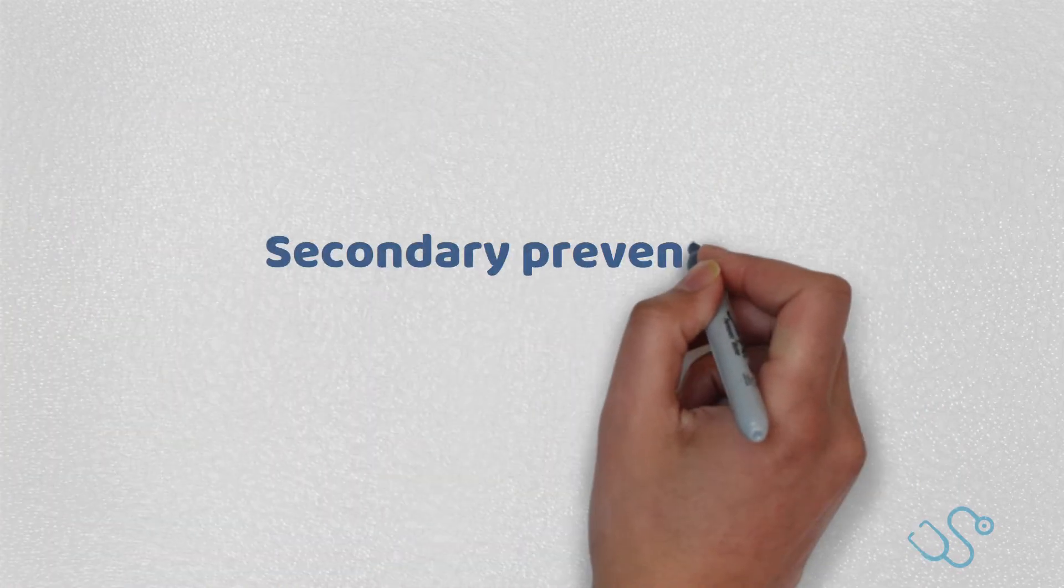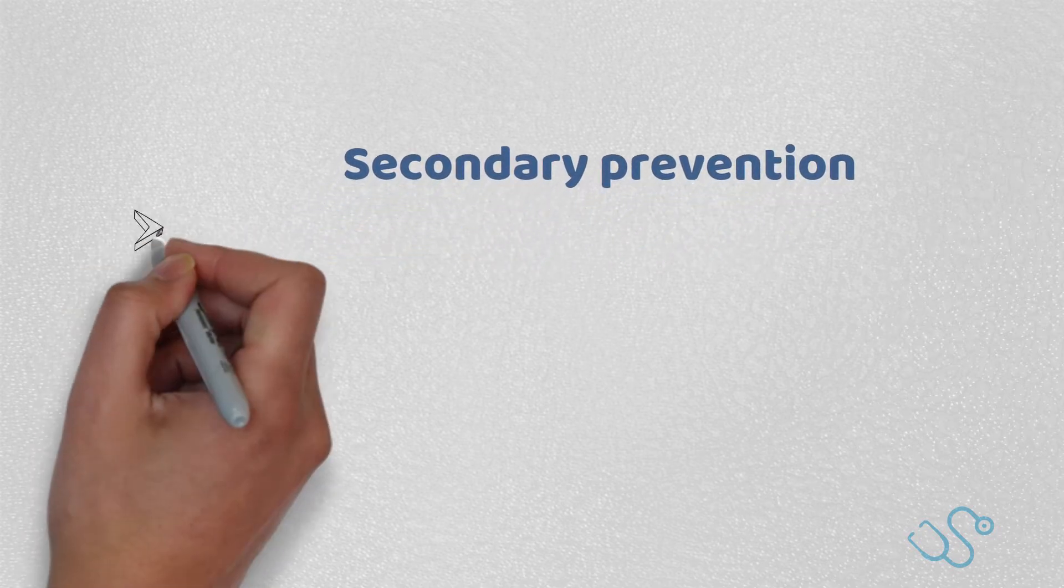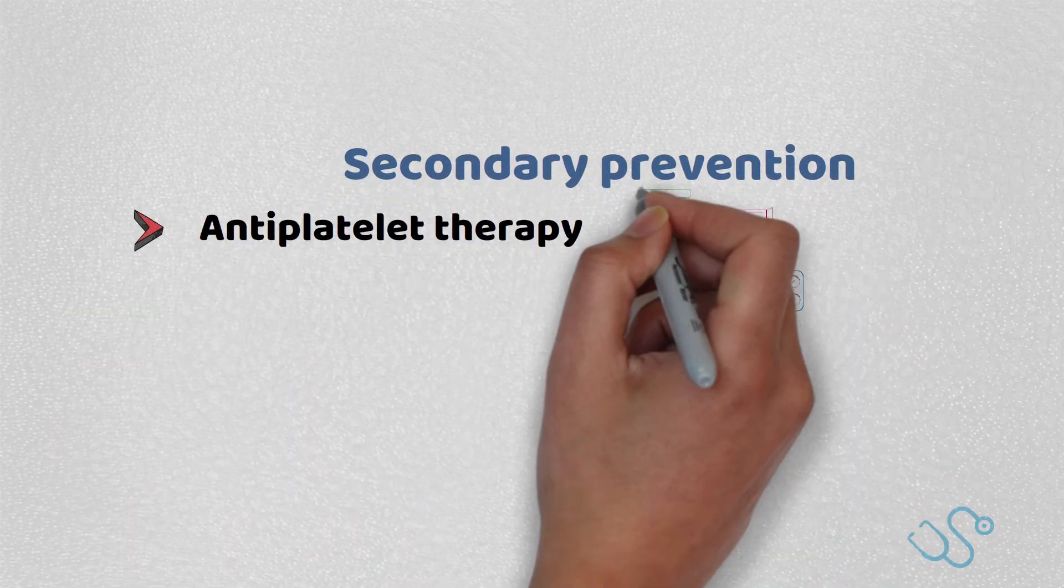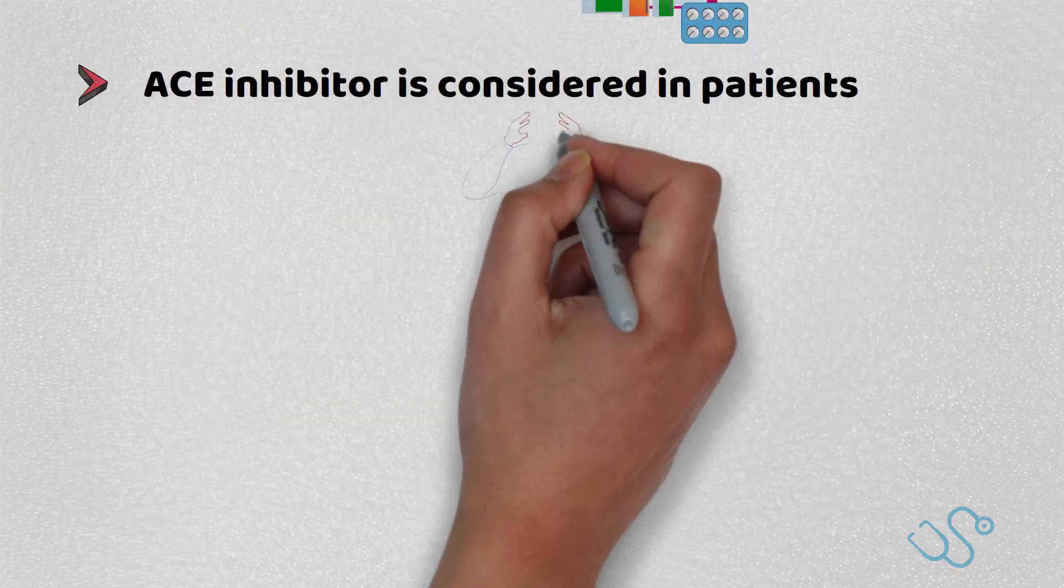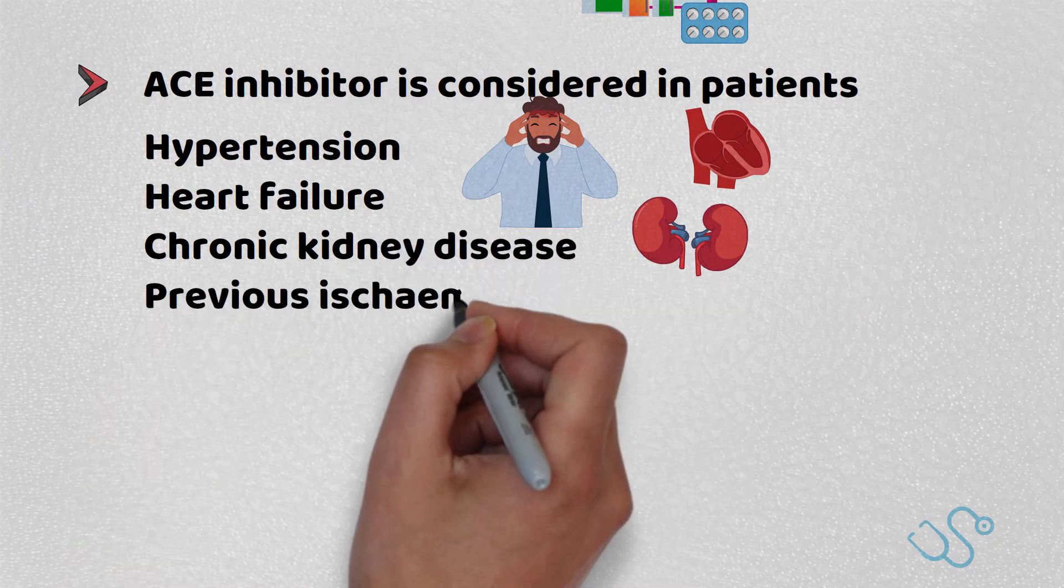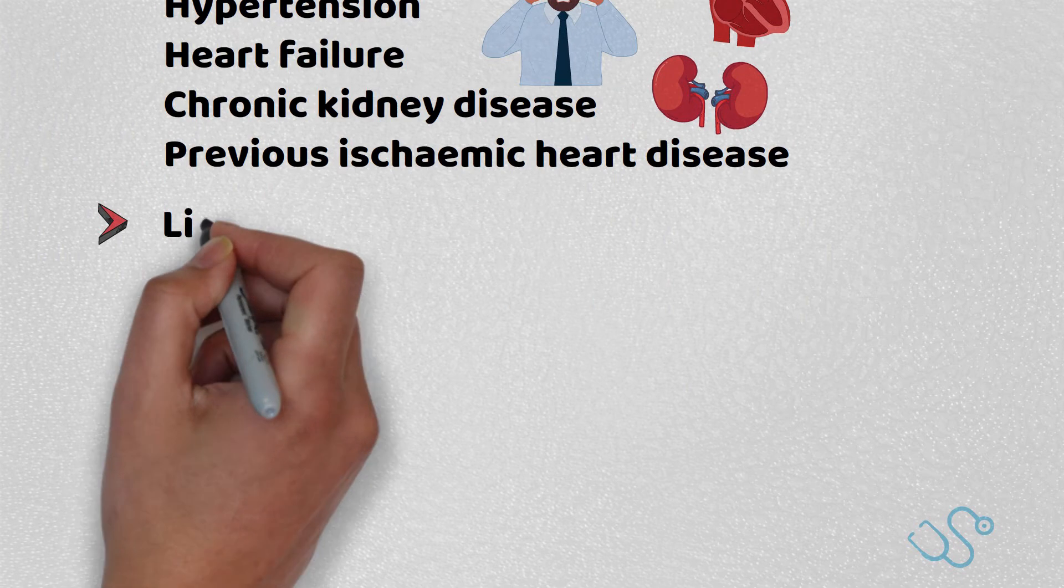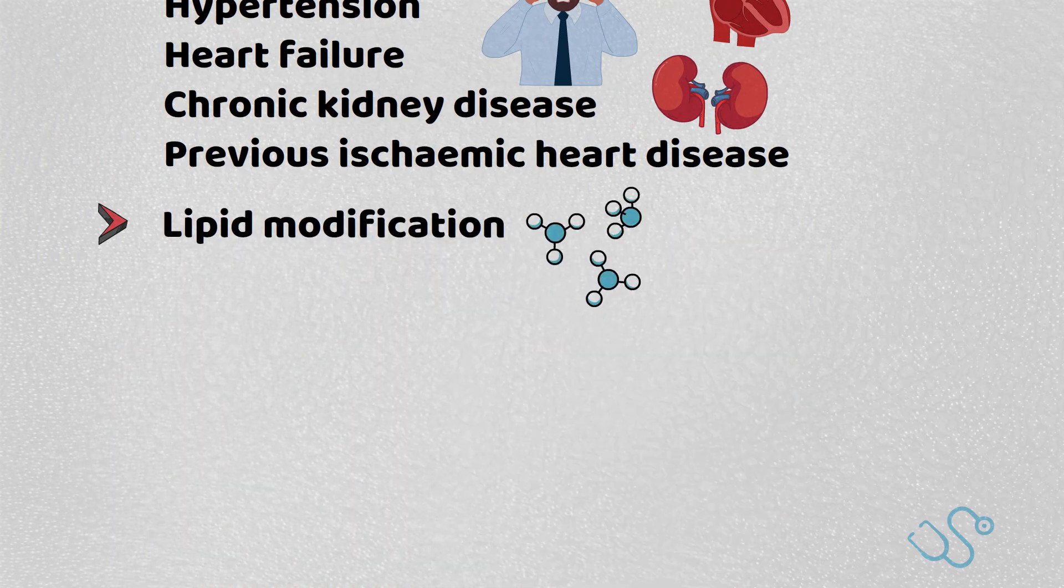Well, what about secondary prevention? Once a patient has established angina, they are advised to take antiplatelet therapy, usually aspirin 75mg a day. Depending on comorbidities, an ACE inhibitor is considered in patients with hypertension, heart failure, chronic kidney disease, or previous ischemic heart disease unless it's contraindicated, and lipid modification and blood pressure control is advised in addition.